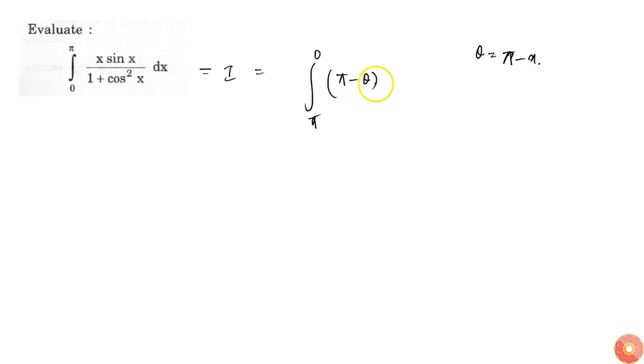Or π minus θ into sin of π minus θ by 1 plus cos square of π minus θ into d of π minus θ. Now this will be equal to from π to 0.